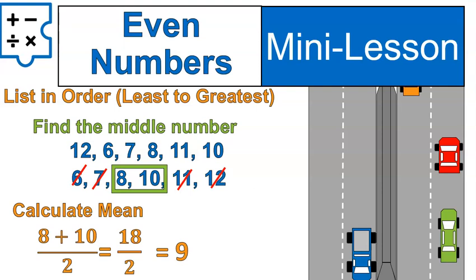In this case, 9. 9 is exactly between 8 and 10. So that is your median. 9 is the median there.